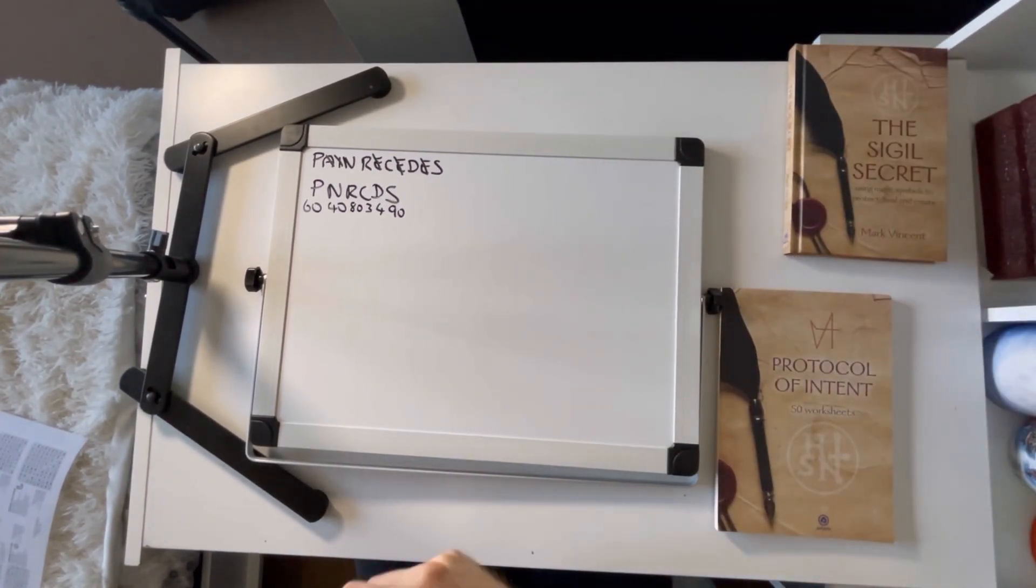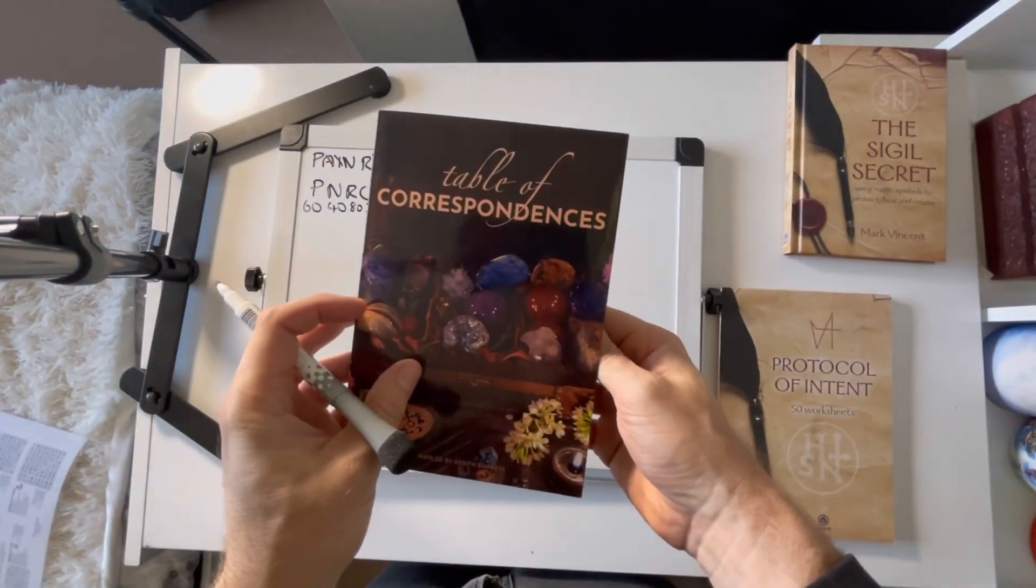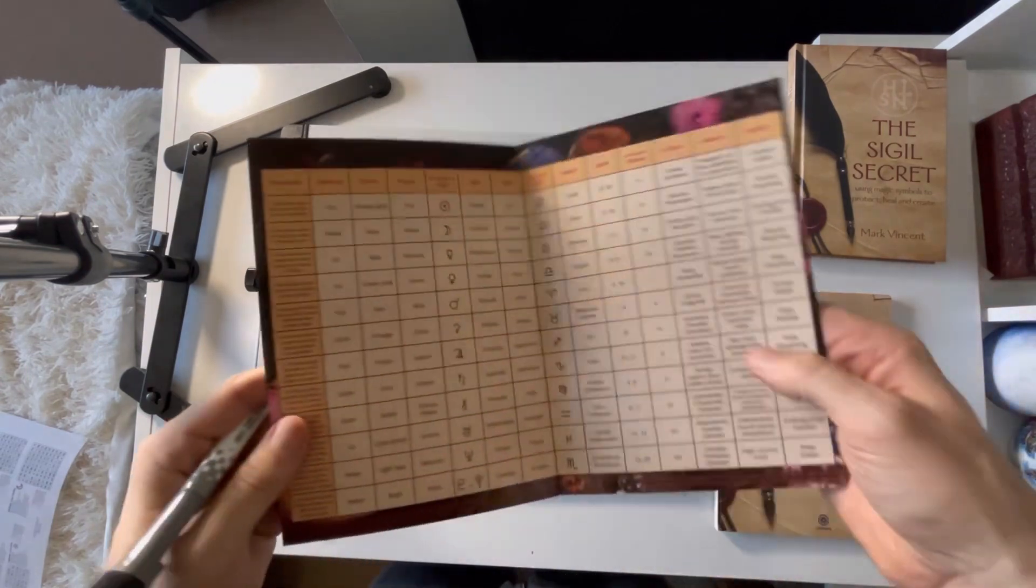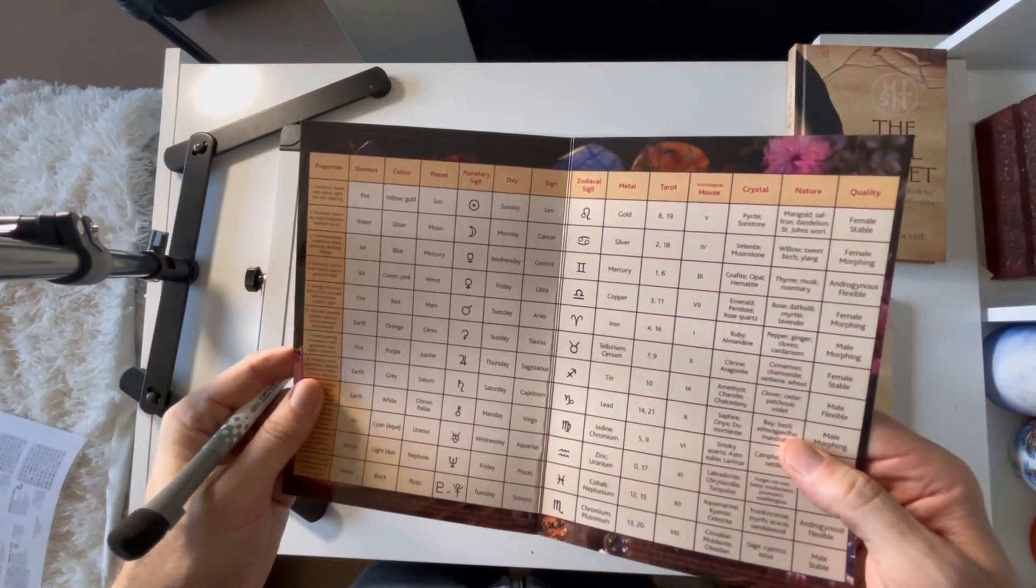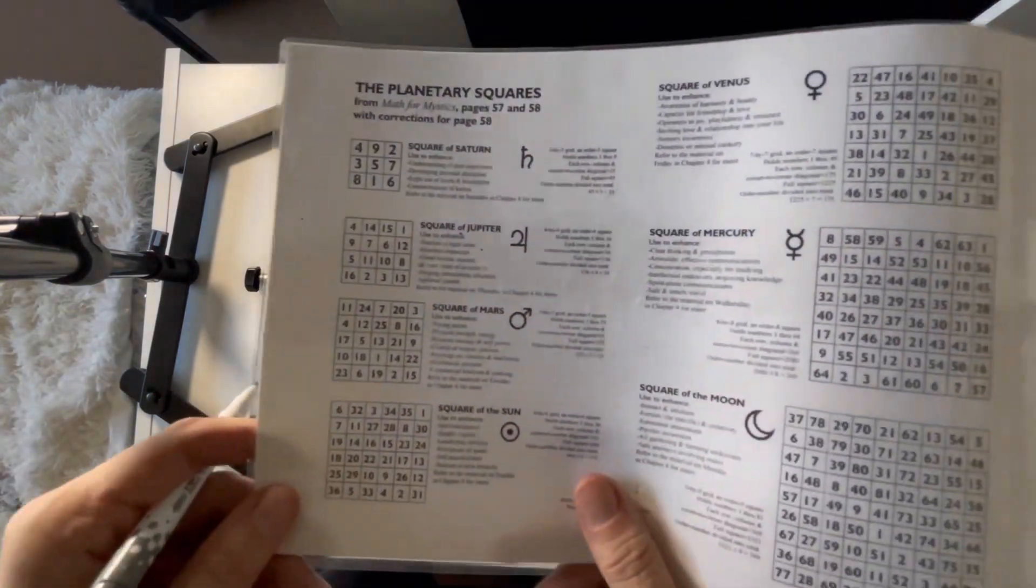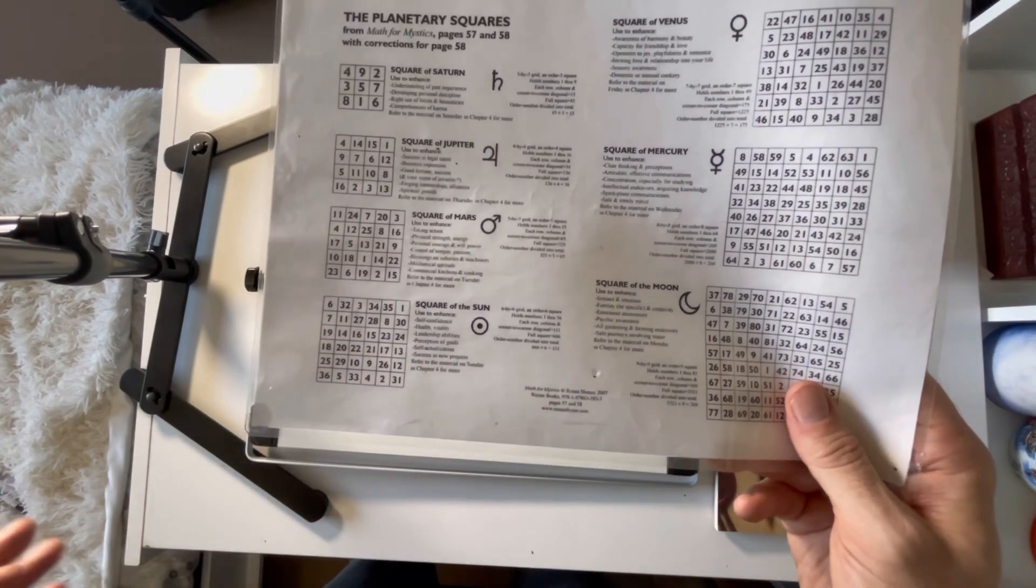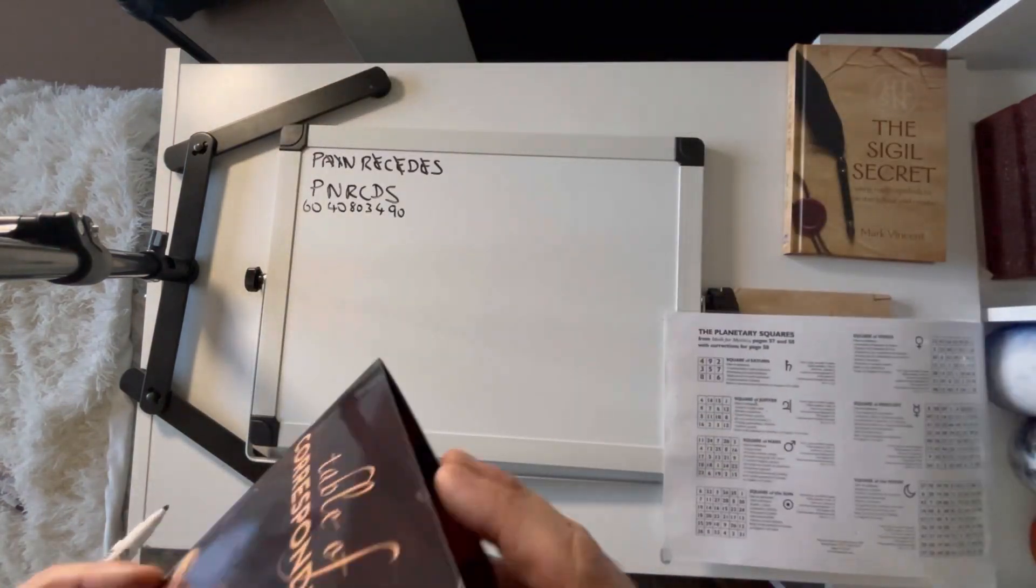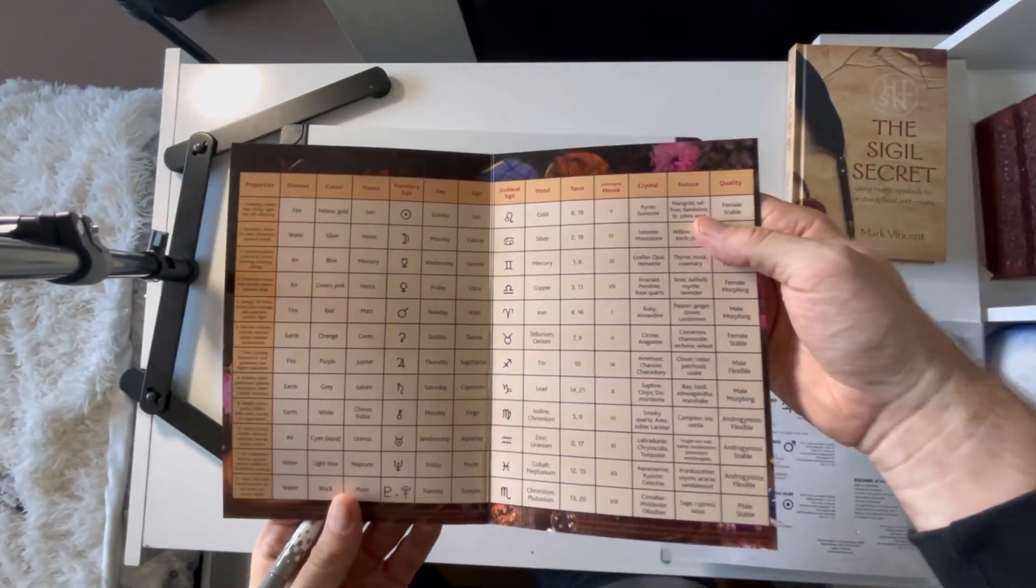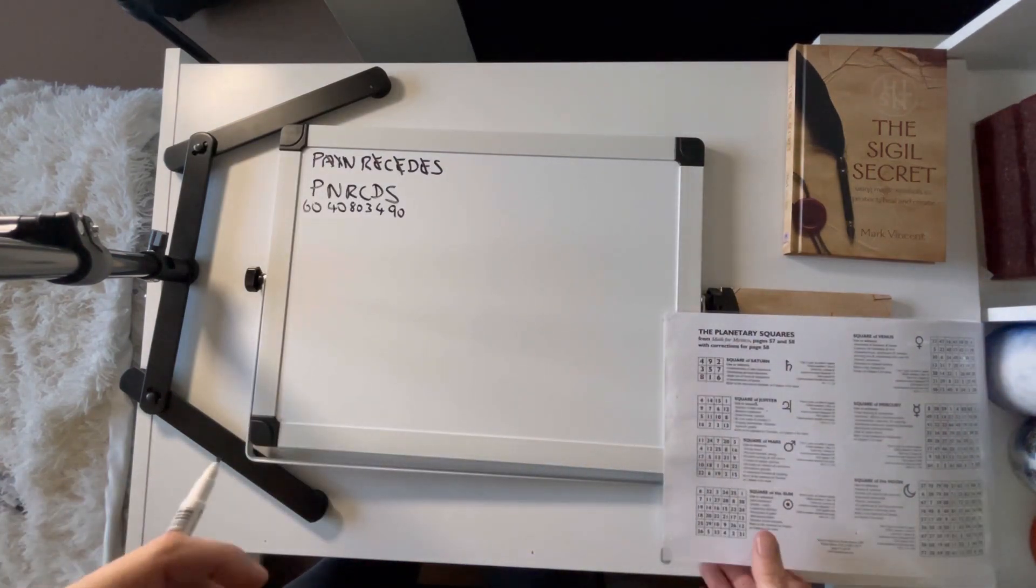I'm going to choose a planetary correspondence that's probably slightly larger. In the book, if you buy the package, there's a table of correspondences. We'd want something associated with healing. For this particular thing, I'm going to use the square of the sun. The sun is associated partly with health.